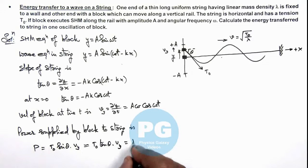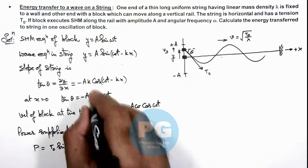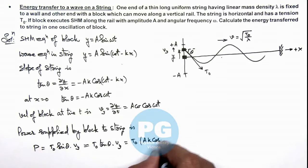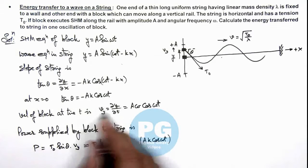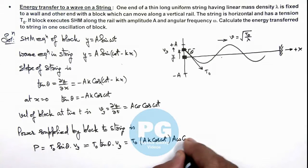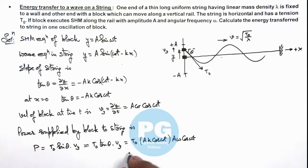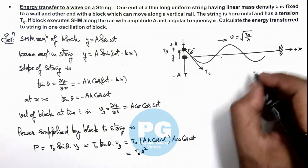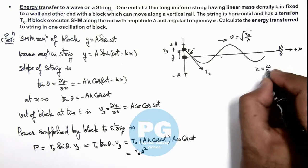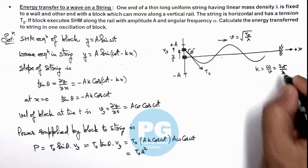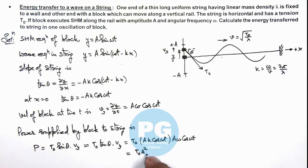On substituting the values, T₀, the value of tan θ, we already calculated in magnitude as Ak cos(ωt) multiplied by v_y is Aω cos(ωt). This is giving us the value of power as T₀ A² k, where k we can write as ω/v. We already know the value of angular wave number is ω/v or it can be written as 2π/λ. So this is A² ω²/v cos²(ωt).